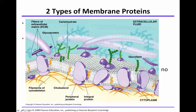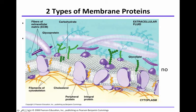Depicted here is our phospholipid bilayer. You have peripheral proteins highlighted here, and you also have integral proteins — you can see how these integral proteins span the entire membrane. They're often called transmembrane proteins, as they go through the membrane, versus peripheral proteins, which are attached to the periphery of the membrane.